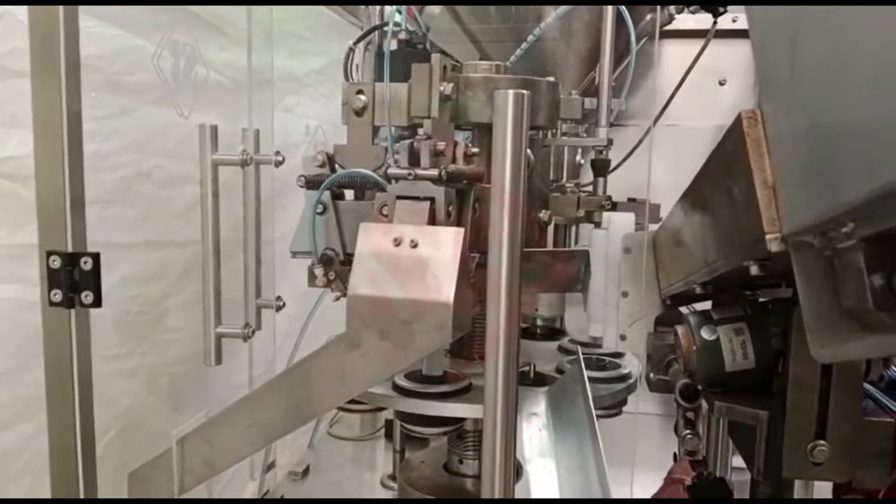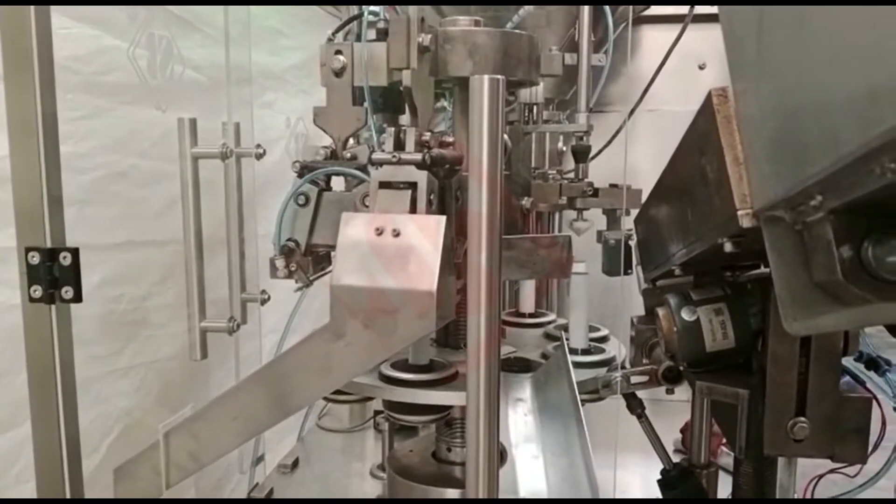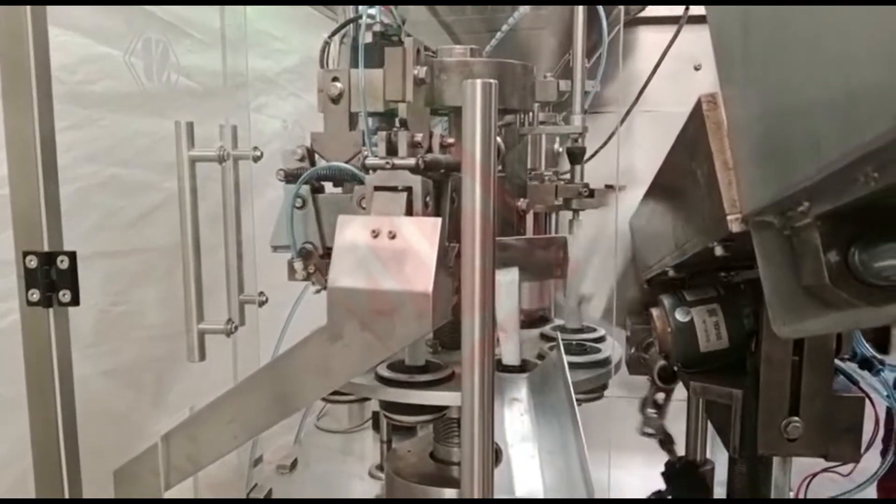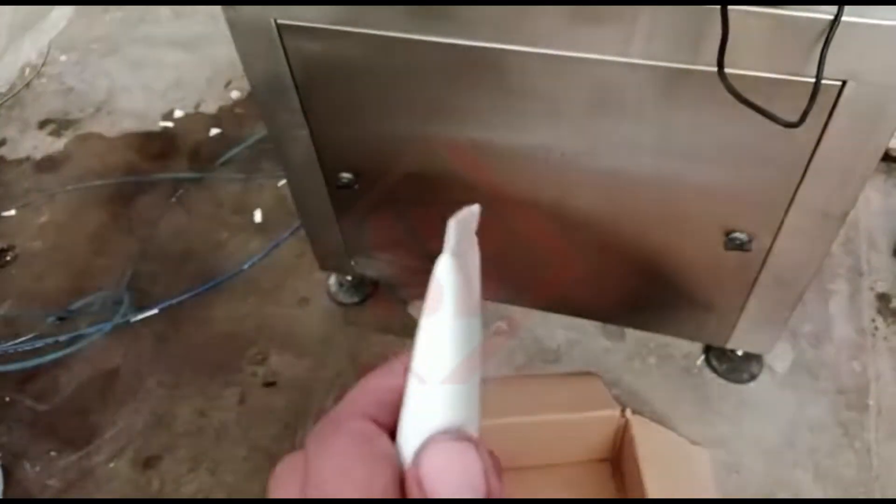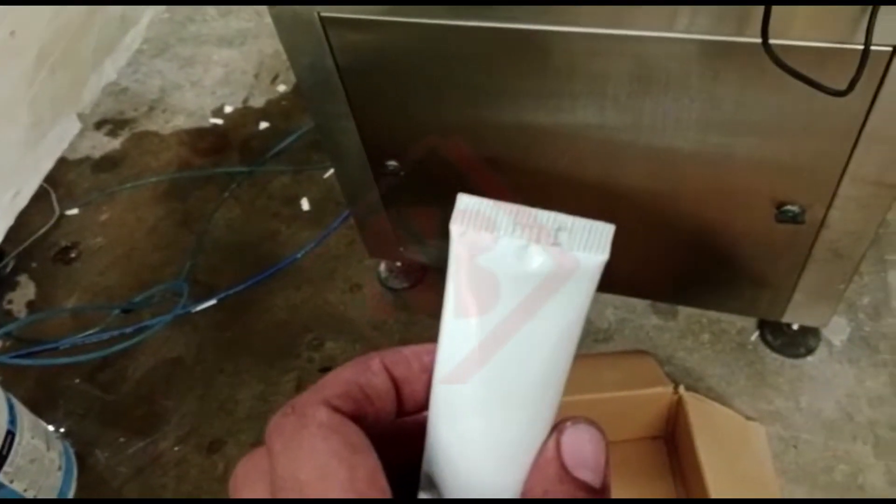Tube filling sealing machines come in various sizes and configurations to accommodate different tube sizes, production volumes, and specific industry requirements. They can be fully automatic, semi-automatic, or manually operated, depending on the level of automation needed for the production process.